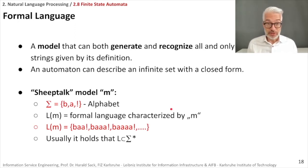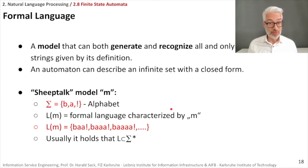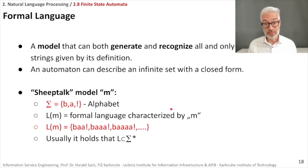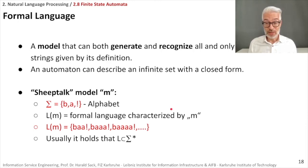Let's go back to formal languages, which can be defined with regular expressions or as the language accepted by a finite state automaton. A formal language is a model that can both generate and recognize all and only those strings given by its definition. An automaton can describe an infinite set with the help of a closed form, because the language is potentially infinite — you can make strings longer and longer — but you can describe this infinite set in a rather short closed form.